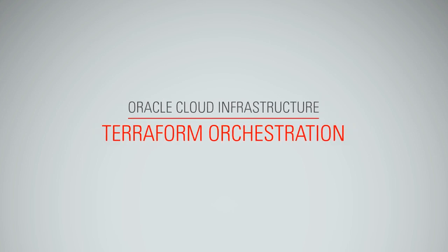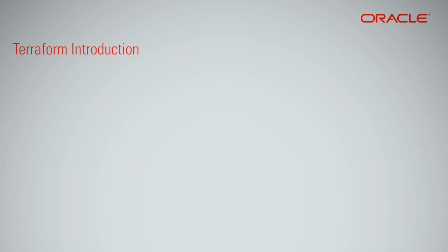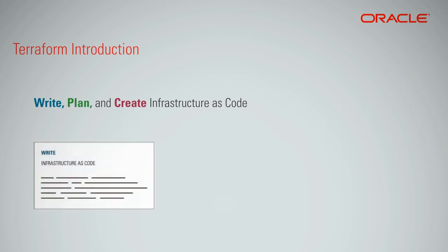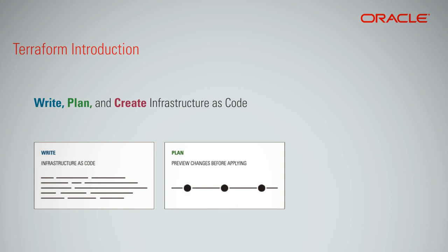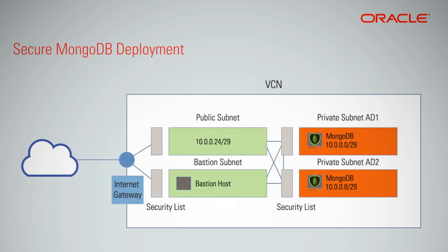Oracle Cloud Infrastructure Terraform orchestration. Terraform enables you to safely and predictably create, change, and improve production infrastructure. It is an open source tool that codifies APIs into declarative configuration files that can be shared amongst team members, treated as code, edited, reviewed, and versioned. It is cloud agnostic.